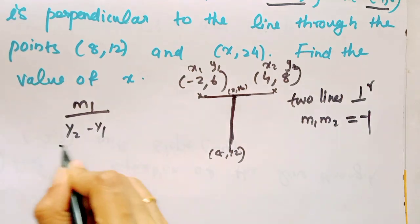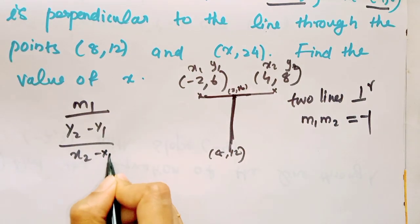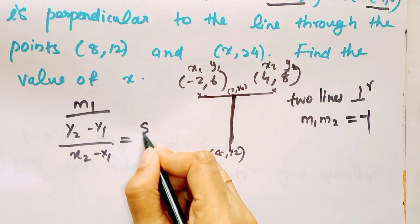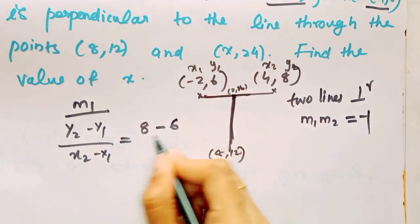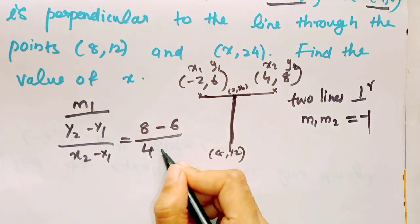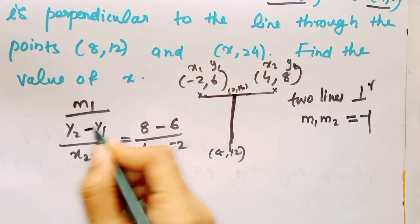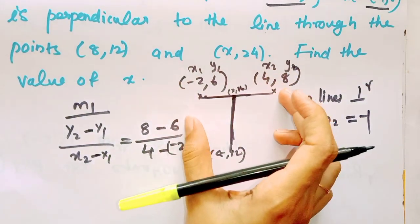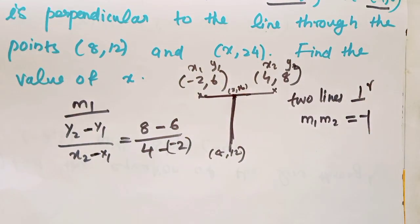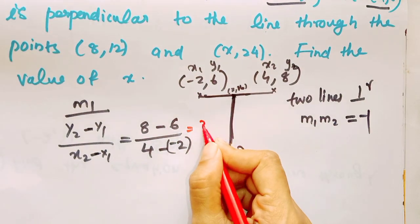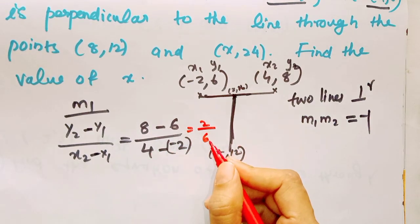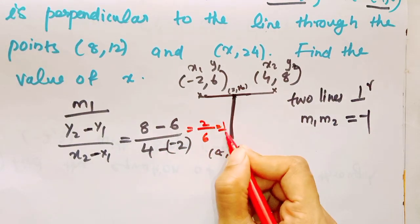Using the slope formula y2 minus y1 by x2 minus x1: y2 is 8, y1 is 6, x2 is 4, x1 is minus 2. So 8 minus 6 is 2, and 4 minus minus 2 is 4 plus 2 which is 6. Therefore 2 by 6 equals 1 by 3. So m1 equals 1 by 3.